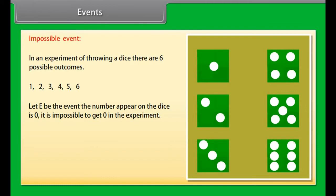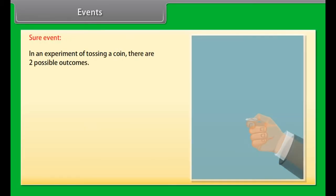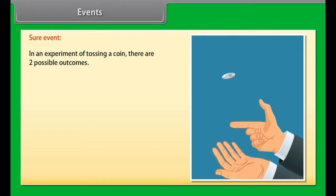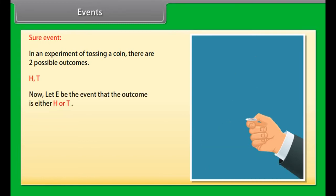Impossible event: to understand it, let's take an example. In an experiment of throwing a dice, there are 6 possible outcomes: 1, 2, 3, 4, 5, 6. Let E be the event that the number appearing on the dice is 0. It is impossible to get 0 in the experiment. Thus, the event E is an impossible event. The probability of an impossible event is 0.